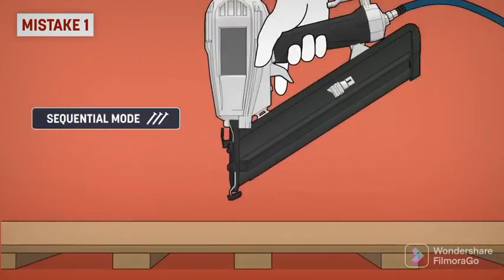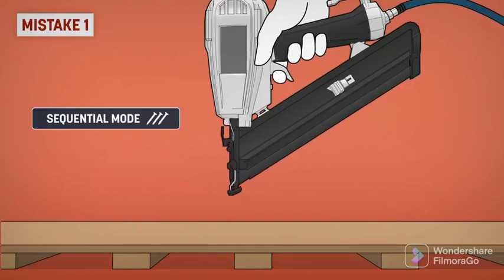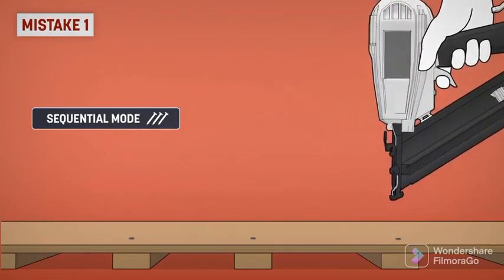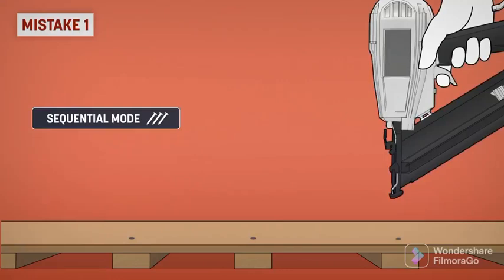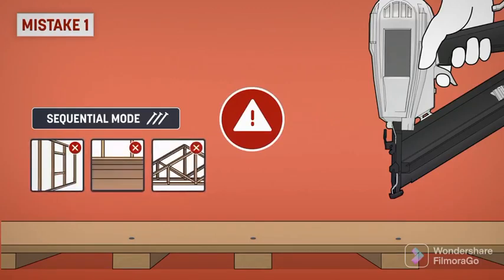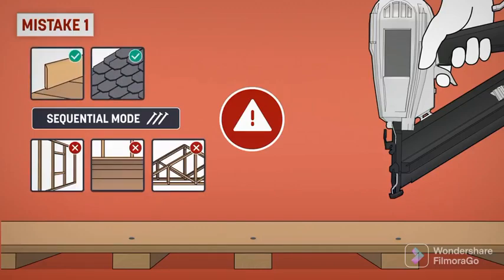When using a contact trigger, the nail gun fires anytime the trigger is held down and the nose is depressed against the surface. There is no safety, and the tool is very likely to fire accidentally. It is forbidden to use a contact trigger for framing work. It is only allowed for finishing work and for installing shingles.